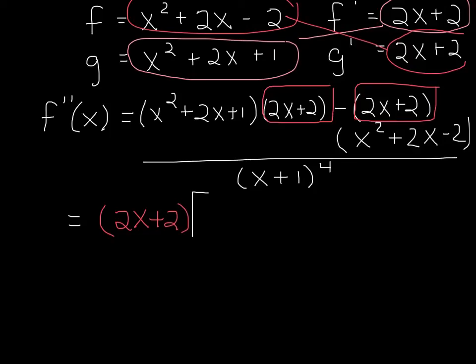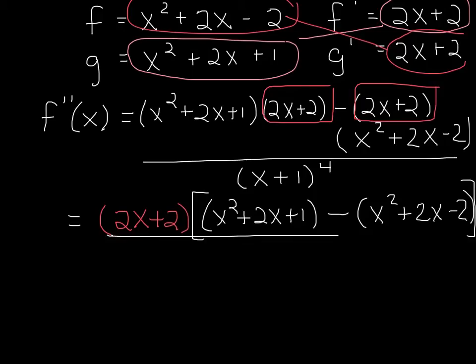And that will leave me x squared plus 2x plus 1 minus x squared plus 2x minus 2. You've got to be careful because they're so similar you can mistake them. Again, all over our friend x plus 1 to the fourth.